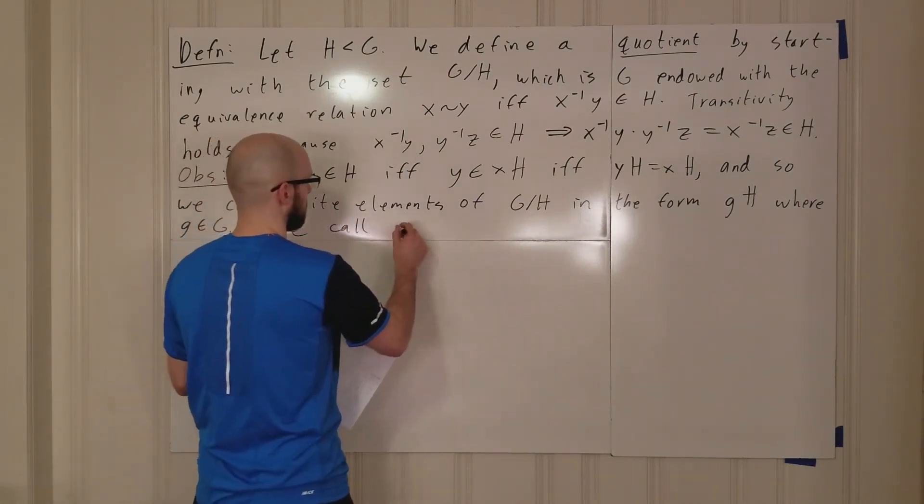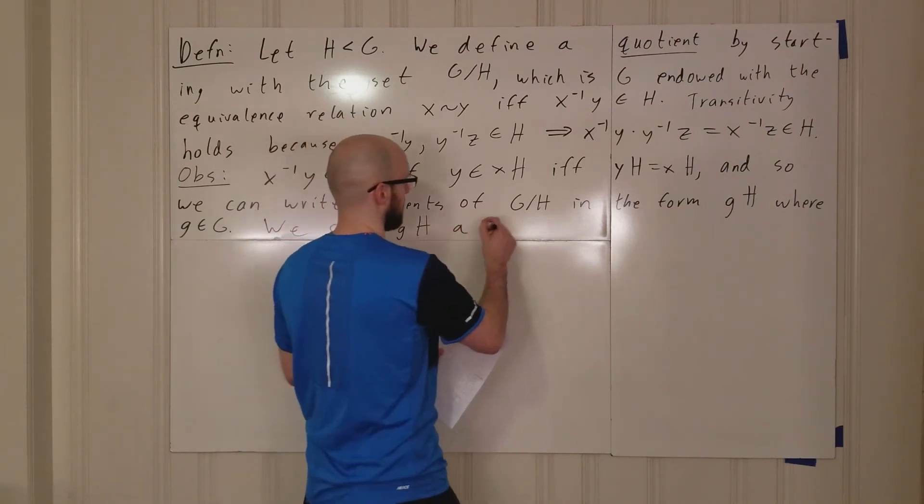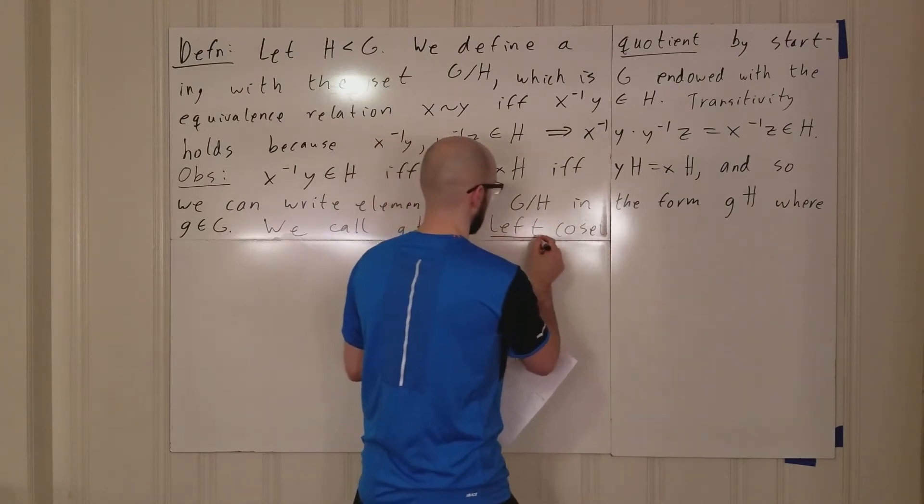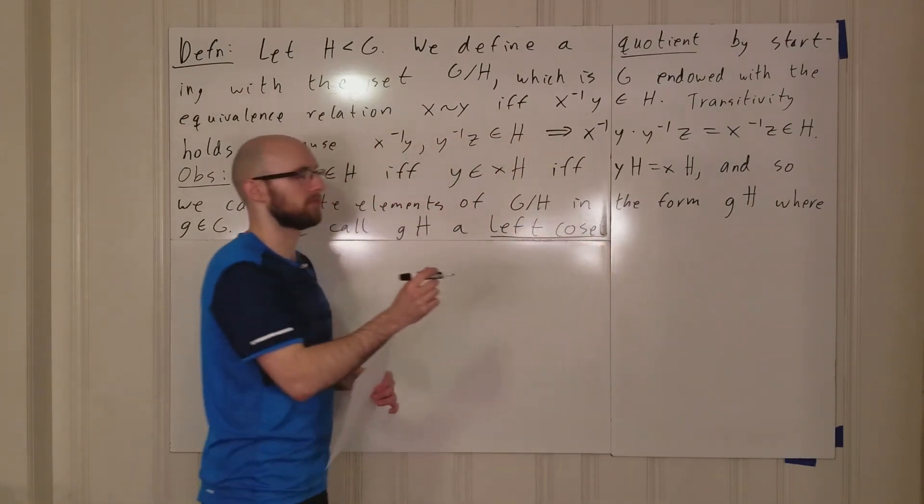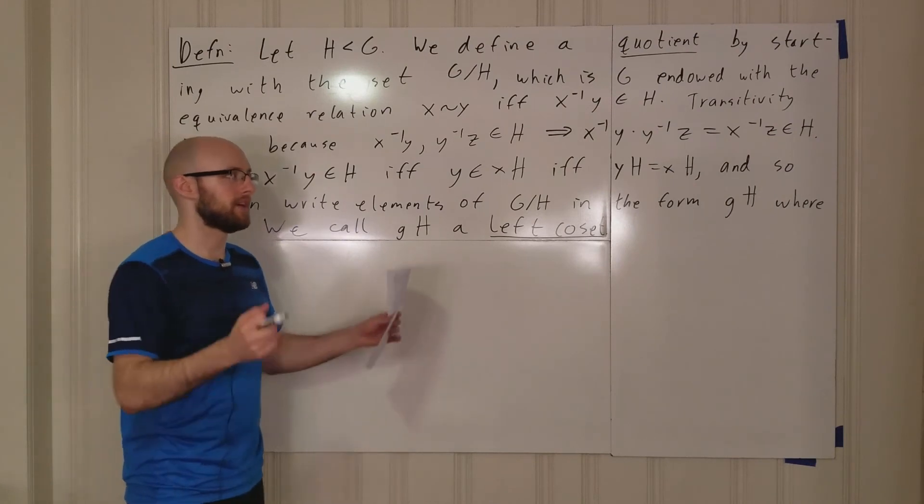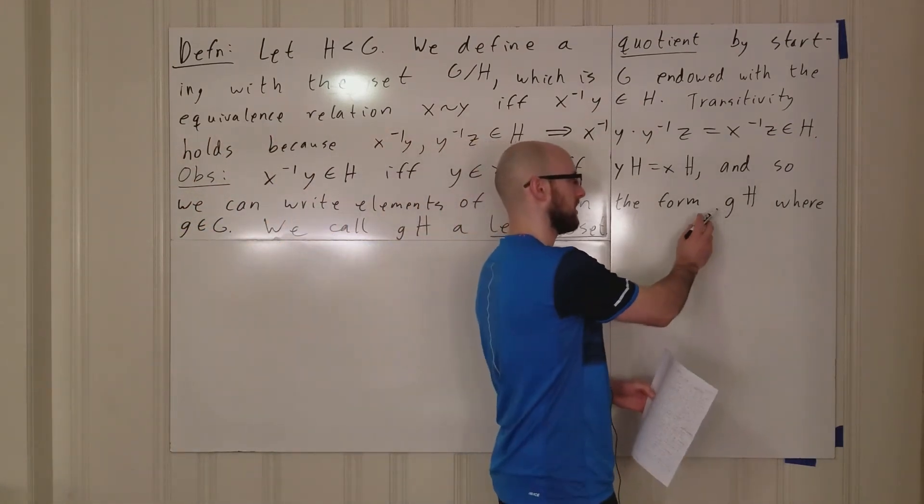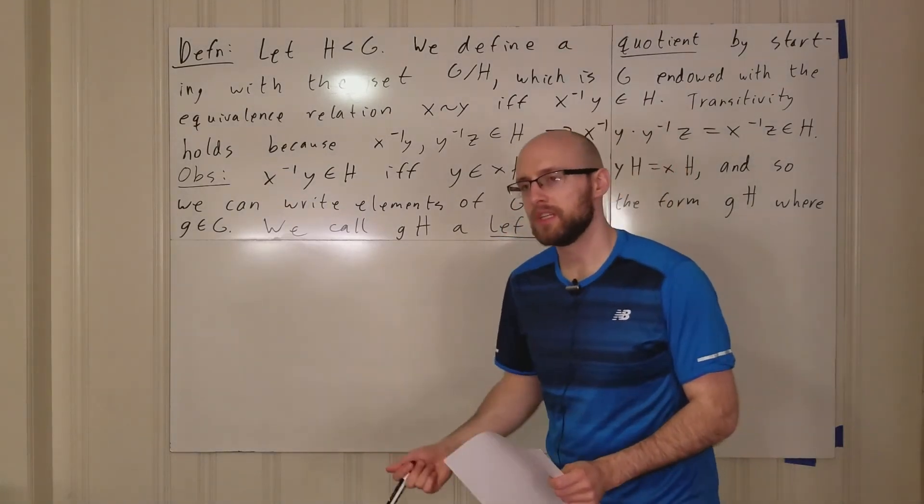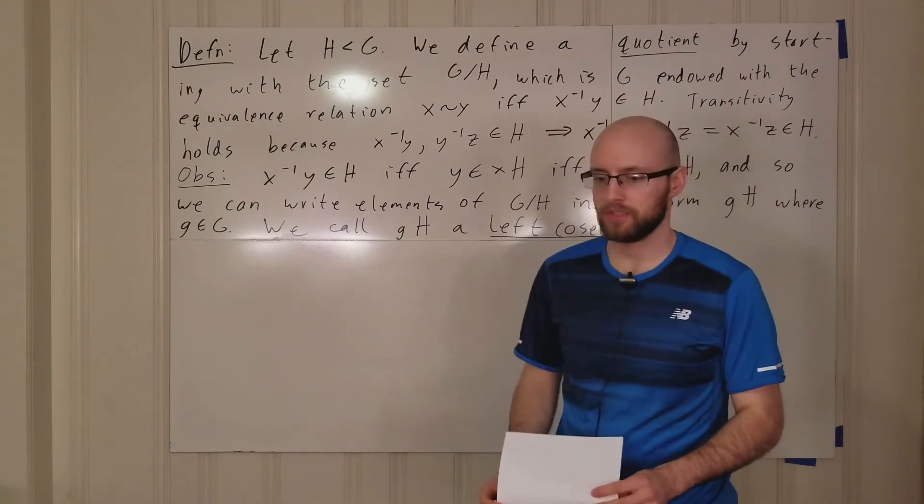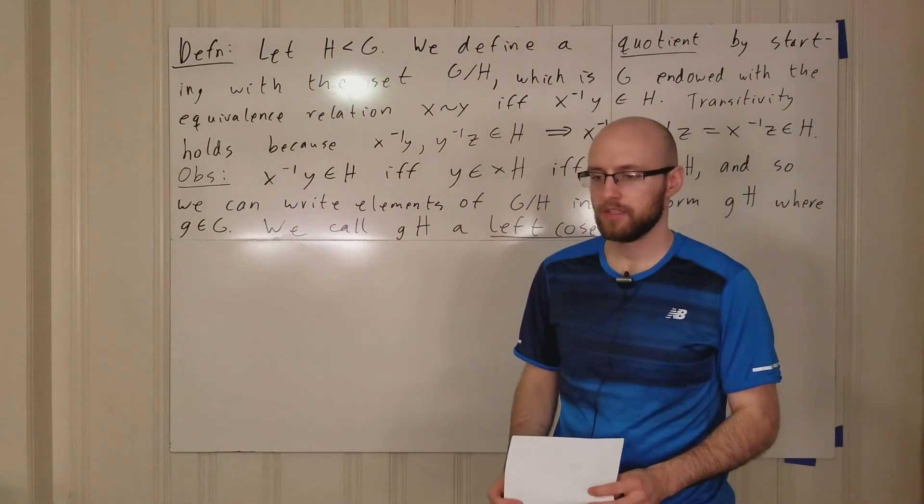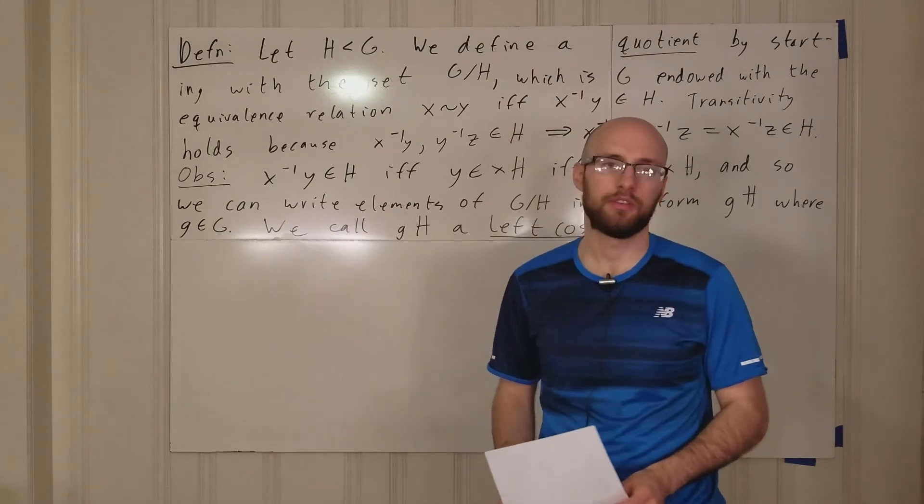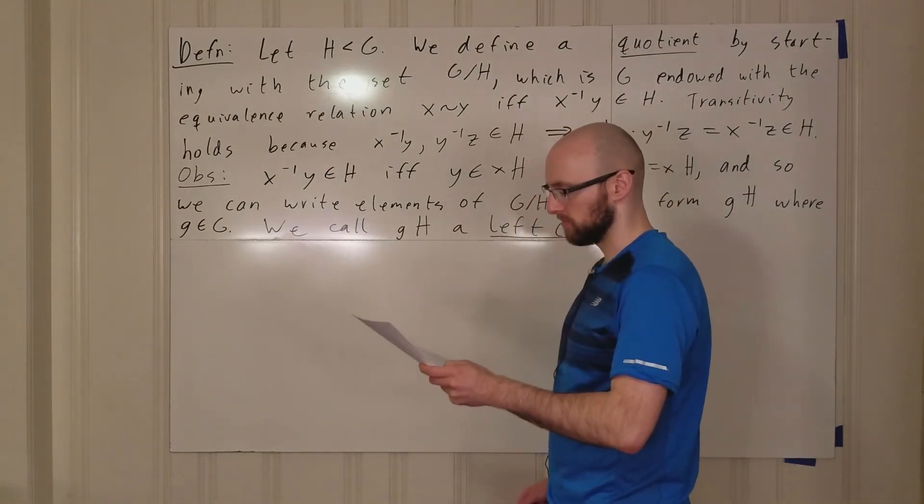We call gH a left coset. That's why I said left coset before, because it's a left coset. Why do we say left coset? That's because that's where the little g goes. The real reason is because left cosets arise when you consider left translation as a group action, but we're not quite there yet. We'll be there soon but not right now.